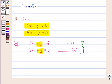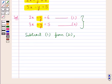Now to find the values of x and y, first of all we would subtract equation 1 from equation 2. So we have 3x minus y minus 2x minus y is equal to 5 minus 6.